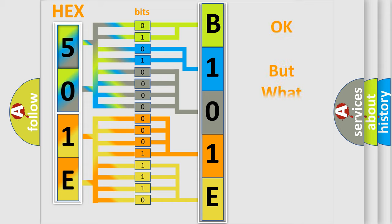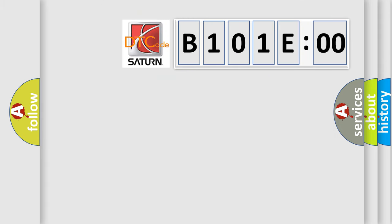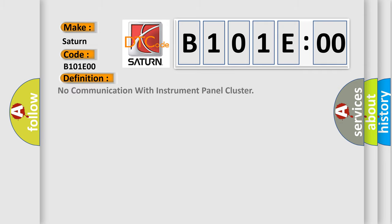The number itself does not make sense to us if we cannot assign information about what it actually expresses. So, what does the diagnostic trouble code B101E00 interpret specifically? Saturn car manufacturer. The basic definition is no communication with instrument panel cluster.